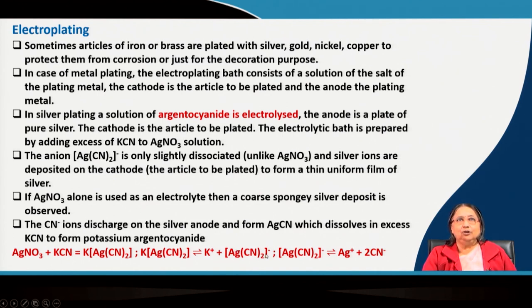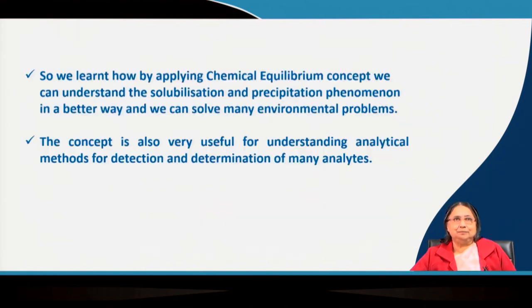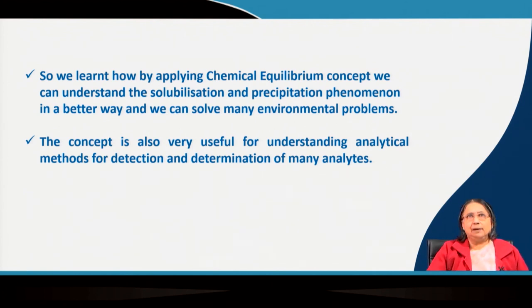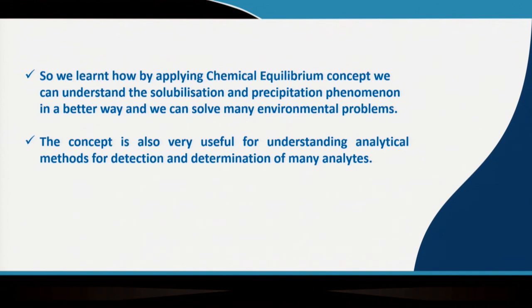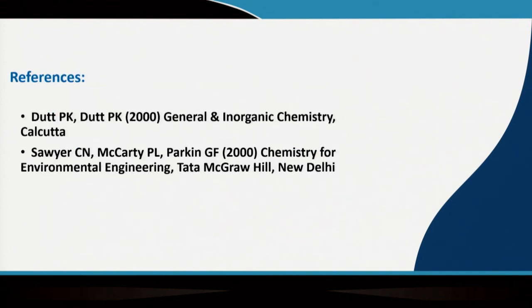From the discussion on chemical equilibrium, we have learned many things — how to apply chemical equilibrium concepts to understand solubilization and precipitation phenomena, how to solve environmental problems, and how these concepts are useful for understanding analytical methods for detection and determination of many analytes. Chemical equilibrium is a very important chapter; we must understand how to form equilibrium expressions and their impact. You can also read the two reference books mentioned for an even better understanding. Thank you so much.